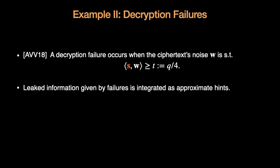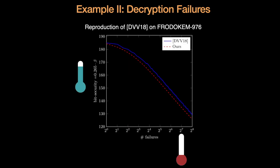As a second example, the decryption failures also provide side information. Indeed, a decryption failure happens if the scalar product of the ciphertext and the secret is abnormally large. This can be integrated as approximate hints. With our tool, we can reproduce the work of Danvers, Guo, Johansson, Nilsson, Verkauteren and Verbaovede from PKC 2018. And we obtain similar results.